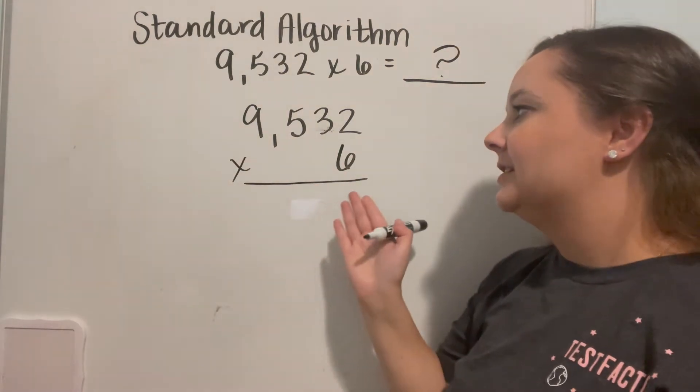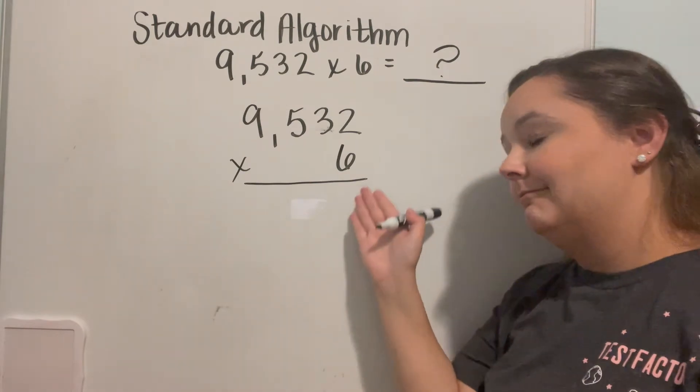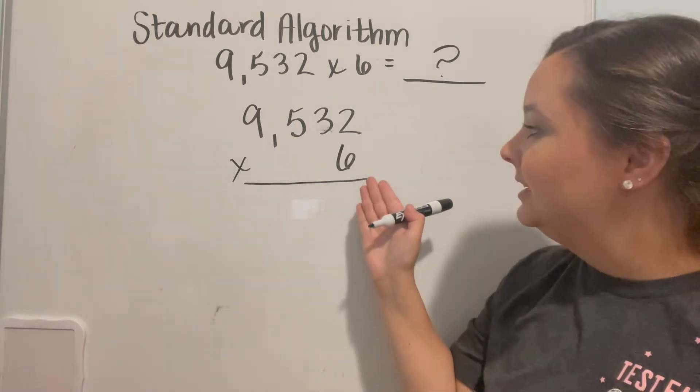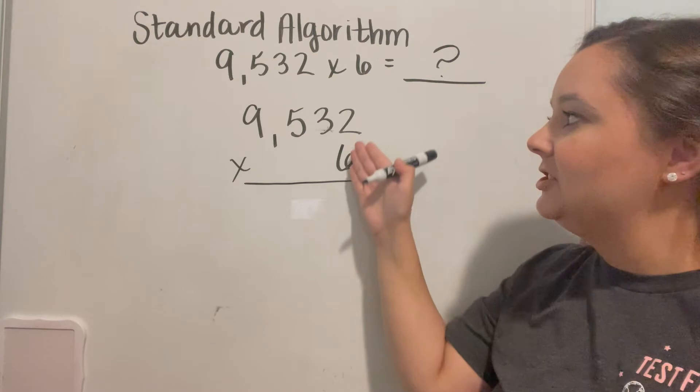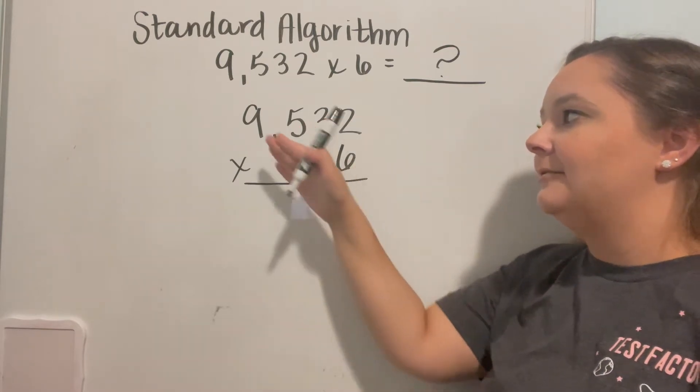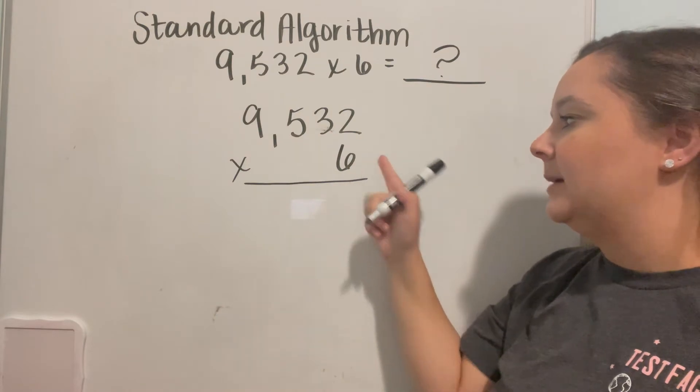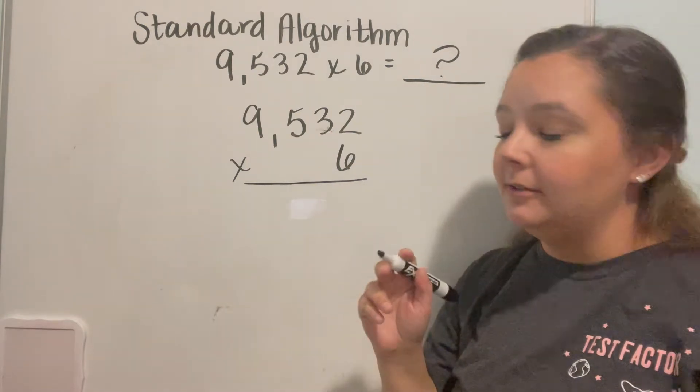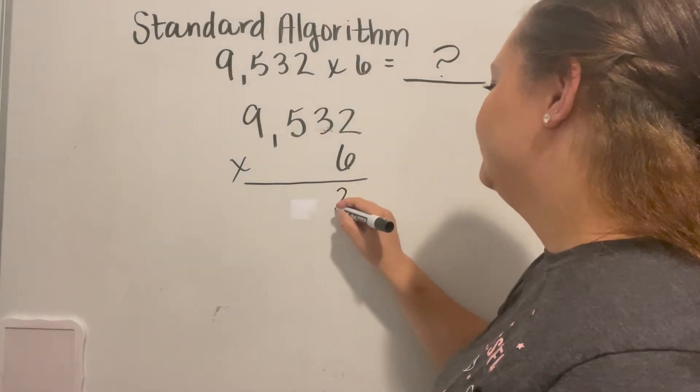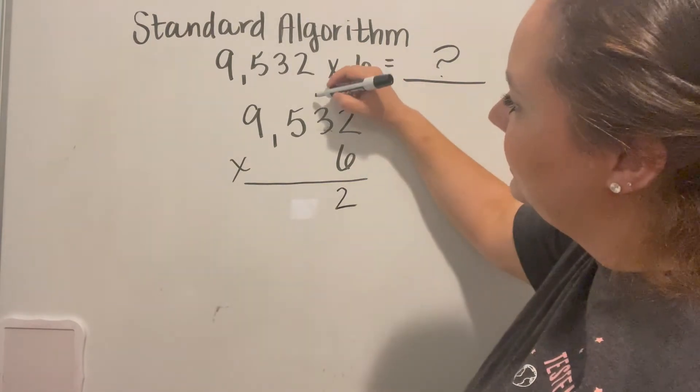Now something that I like to remind students of when we're doing this kind of problem is that each of these digits need to be multiplied by the factor that's on the bottom. So we're going to start over here with 2 times 6, which gives me 12. I'm going to put my 2 here.